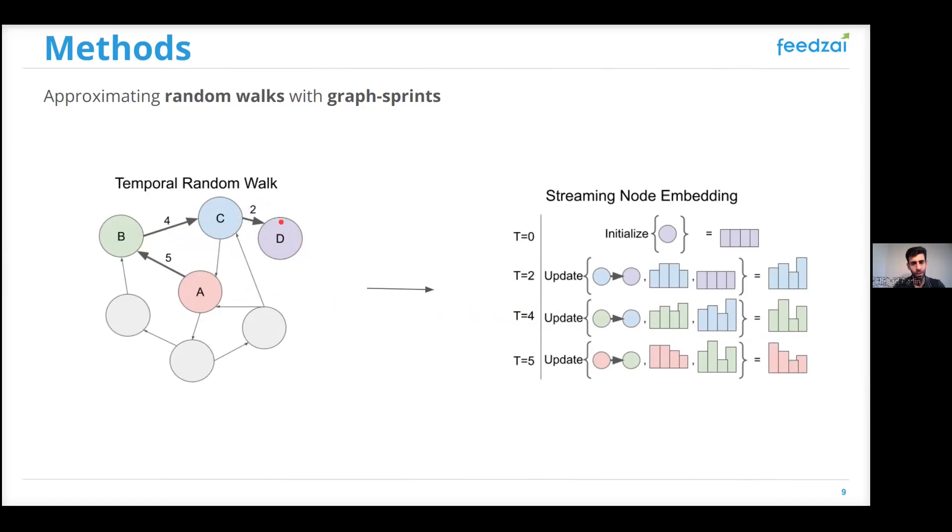And finally, at timestamp 5, when we want to obtain an embedding for node A, we just need to fetch the latest embedding of node B, and together with the edge features, we can generate an embedding for node A.